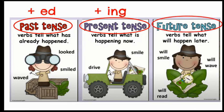The future tense verbs tell what will happen later — sometime in the future. It didn't happen yet, it isn't happening now, but it will happen. The key word is 'will' — we add will in front of the verb. For example: she will smile, I will wave at my friend, I will read for my homework.